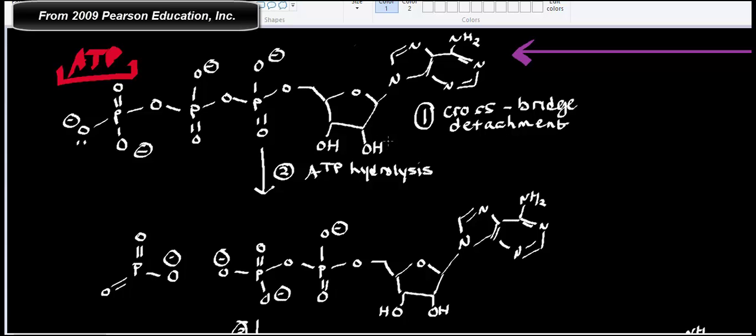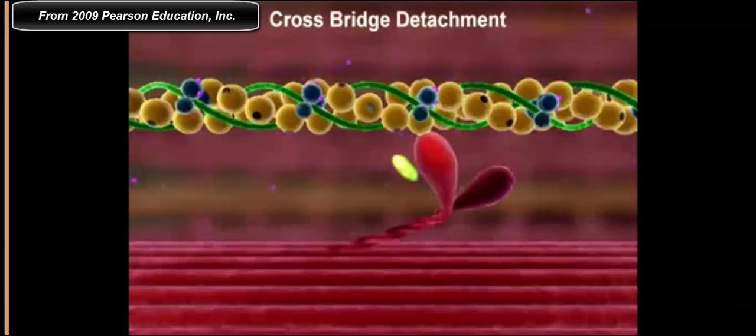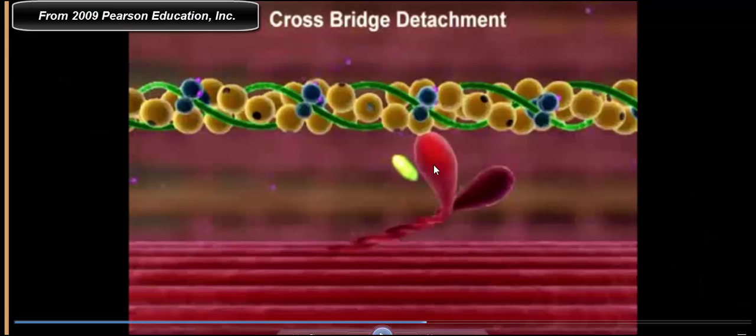It's a nucleotide. It has adenine up here, the ribose ring, and the three phosphates. When ATP binds, we're going to get something referred to as cross-bridge detachment. When ATP binds, this cross-bridge between the myosin and the actin is going to break.